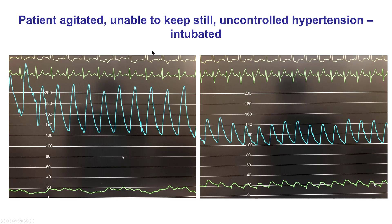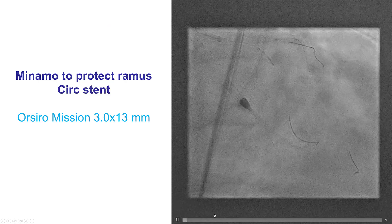At this point, the patient became agitated and was moving a lot, making the procedure very difficult. Paradoxically, he was hypertensive with a blood pressure exceeding 200. The patient was intubated, followed by relaxation and a significant decrease in systemic pressures without a significant increase in PA pressures.